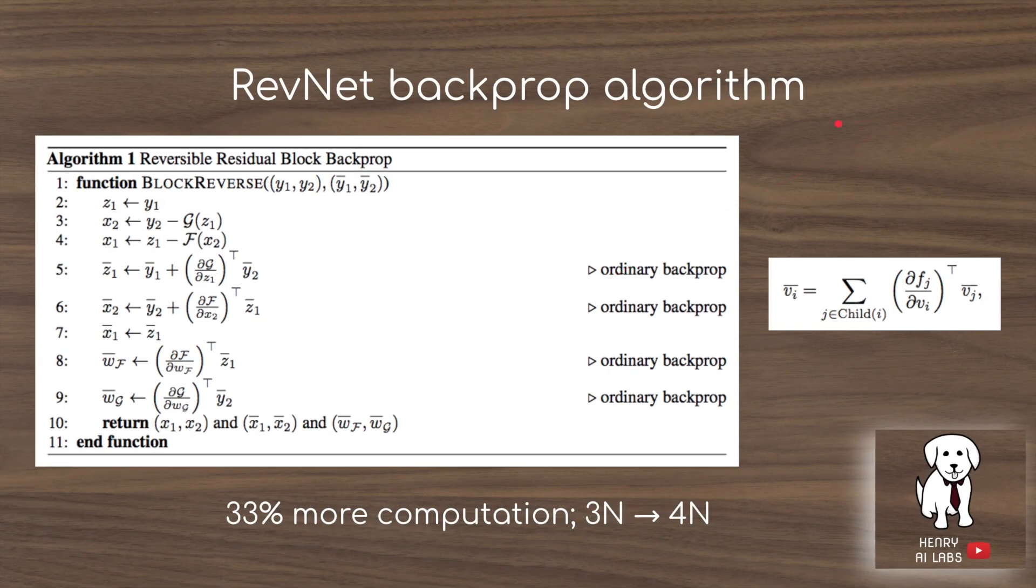Overall, this is the RevNet backpropagation algorithm, and the key difference here is that you have to do another forward pass. Usually, if you needed n computation for the forward pass and 2n for the backprop, now you're going to need 3n for the backprop, because you're going to have to do one more forward computation in each of these blocks to derive the input from the activations. Overall, this is 33% more computation than the original block would be.